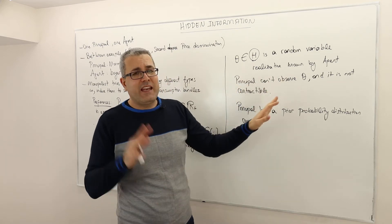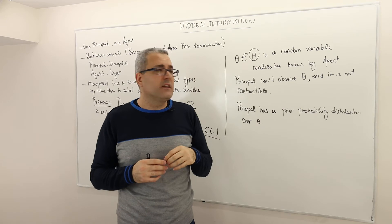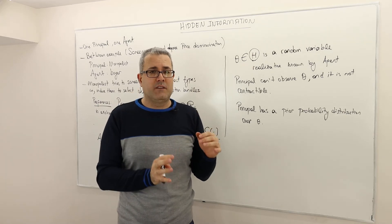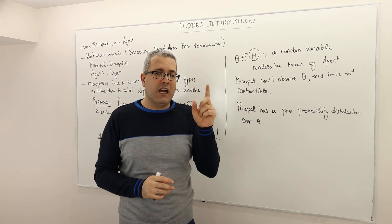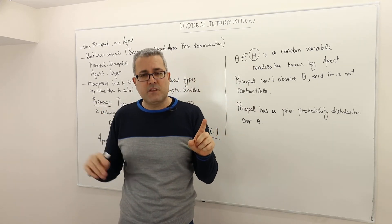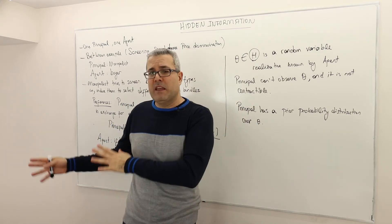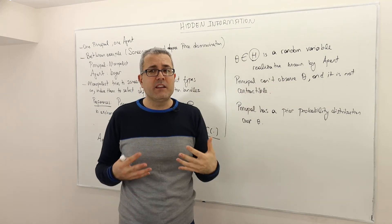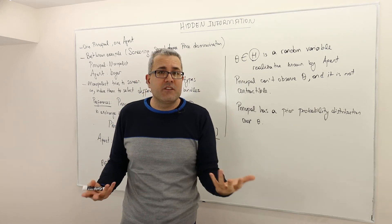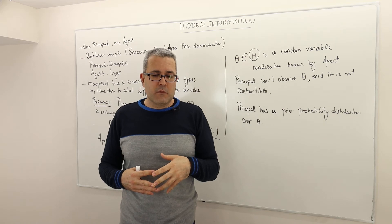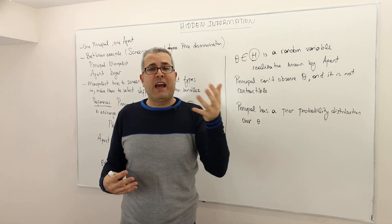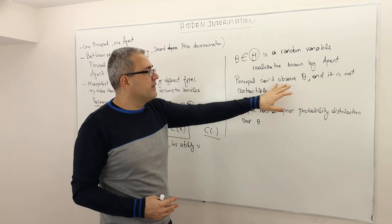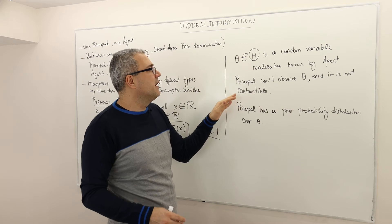Again, the principal cannot observe theta and therefore it is not contractible. What does that mean? That means you cannot write theta into your contract, meaning you can't say, if you are type blah blah, then you have to pay me this. If you are type blah blah, then you have to pay me that. So you cannot condition your contract with theta. Why not? That's the whole point. You can't observe theta. And so you cannot enforce that the real types actually buy the contract that are designed for them. So for that reason, you cannot put theta into contract. We call it non-contractible.